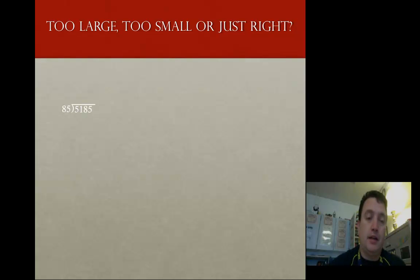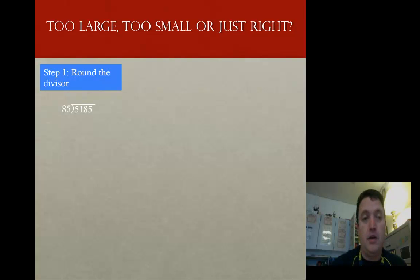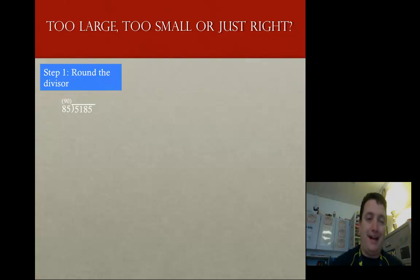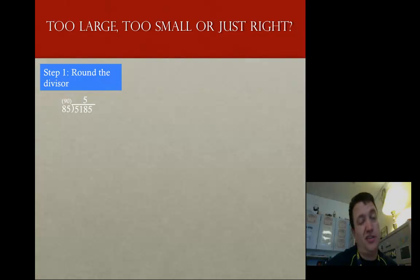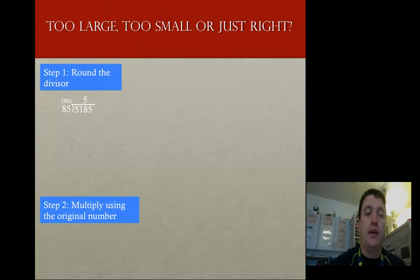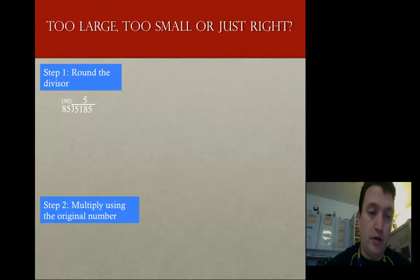Let's take a look at the first one. Step one is to round the divisor. We've got 85 here, so if I round it, I'm going to make it 90. If I look at 90, how many times does 9 go into 51? I come up with 5, because 9 times 5 is 450. 9 times 6 is 54 — too big. Then I go to multiplying with the original number. When I do 5 times 85, I get 425.